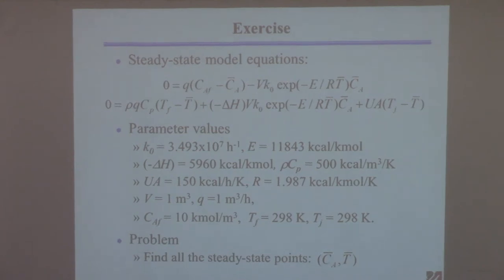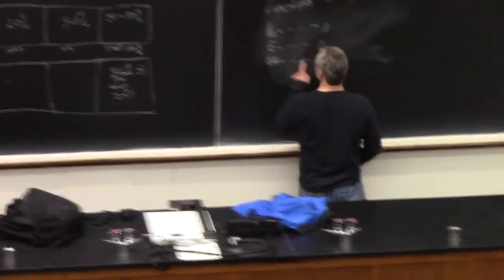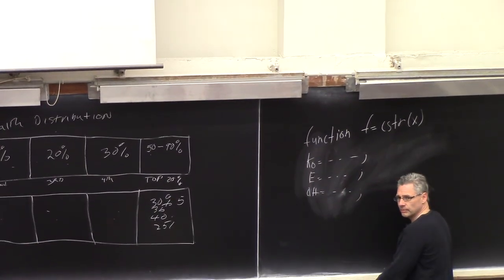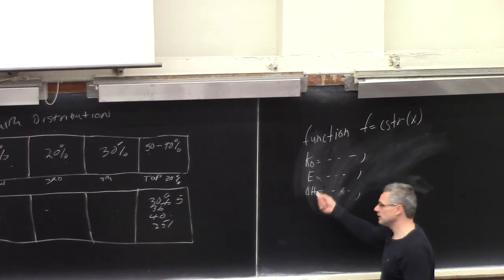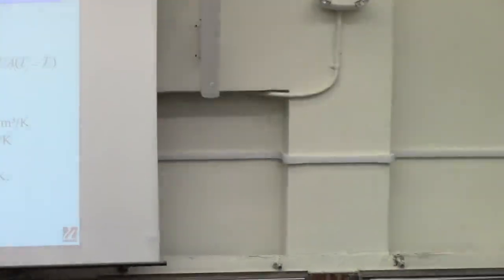So the first thing you should do when you write this thing is to do the following. Start defining these constants. You know, K0 equals something. Activation energy, call it E, equals the value. Put a semicolon here so it doesn't print out. Define all the parameters that I've given you here. Give them names. Like K0 and E, and, you know, I might call the heat of reaction DH. It doesn't matter what you call them, but you have to define these things. You have to define all those parameters.